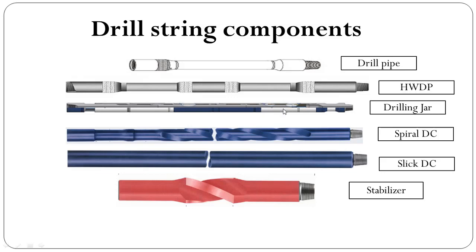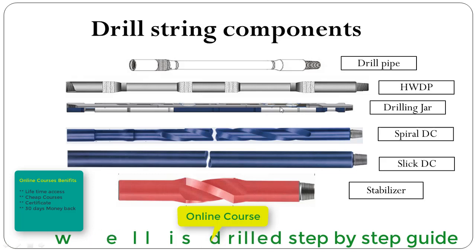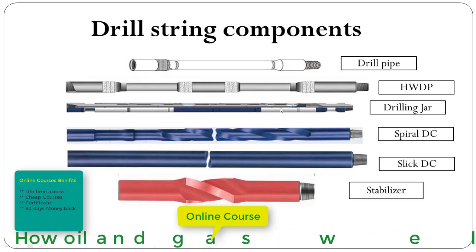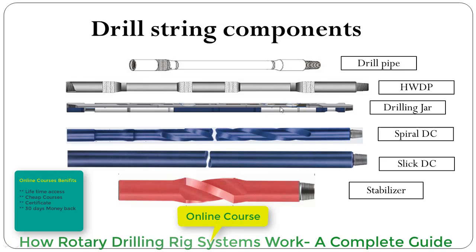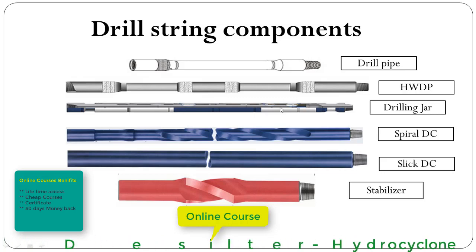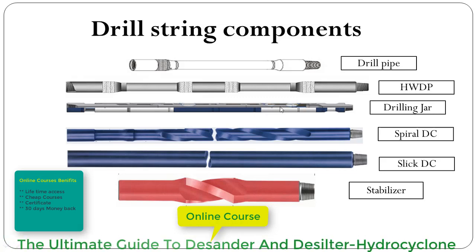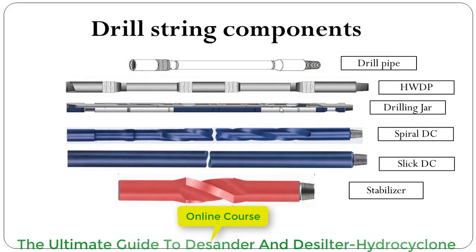Another component of the drill string is the drilling jar. The drilling jar can be of three types: hydraulic drilling jar, mechanical drilling jar, and hydromechanical drilling jar. The drilling jar can operate in both upward and downward directions. It is used to give a shock impact in case the drill pipe or drill string gets stuck.